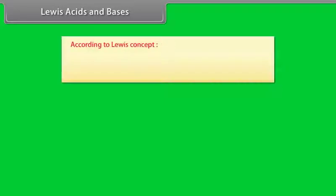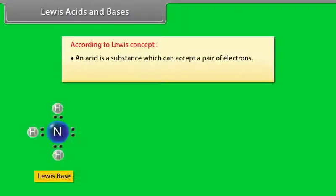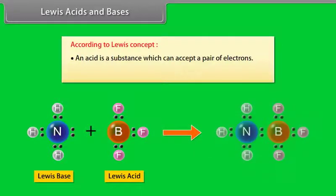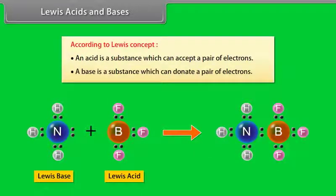According to the Lewis concept, an acid is a substance which can accept a pair of electrons, and a base is a substance which can donate a pair of electrons. For example, in the reaction BF₃ acts as a Lewis acid.